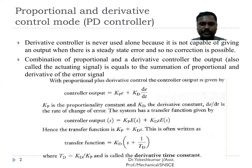In the Laplace domain, the controller output is given by KP·E(s) plus KD·s·E(s). Therefore, the transfer function is KP plus KD·s, often written as KD·(s + 1/TD), where TD is the ratio of the derivative constant to the proportional constant, also called the derivative time constant.